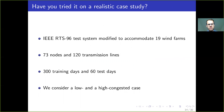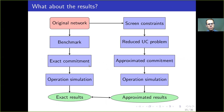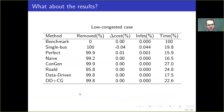We tested on the IEEE 96-bus test system with 300 training days and 60 test days, under two cases: low and high congestion. To compare results, we solve the benchmark model to get exact commitment and exact results, then apply each of the eight screening methods to get a reduced unit commitment problem with approximated results to compare against the benchmark. In the low congestion case, we compare the percentage of constraints removed, errors in the objective function, infeasibility, and time reduction.